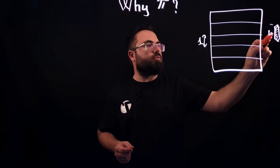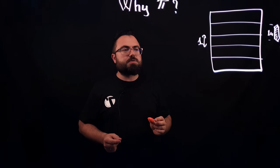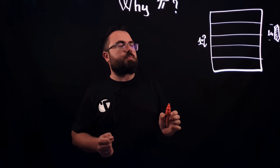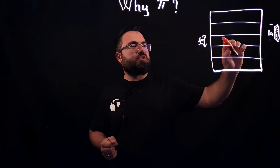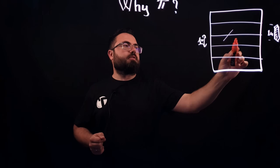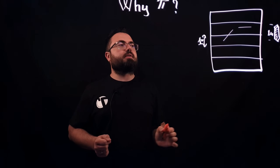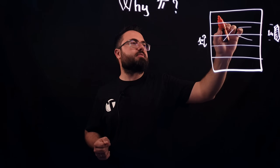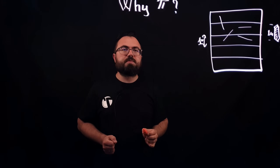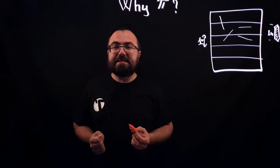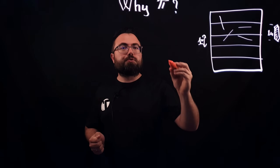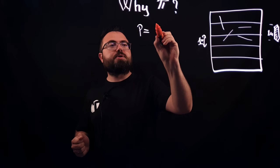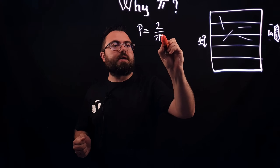We also have a needle with a height of one unit. The question is: what is the probability that if you throw the needle on this paper, it will actually hit one of the lines? There's a probability it doesn't hit, but in certain situations the needle will hit a line.